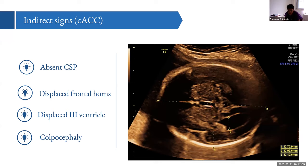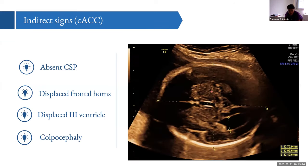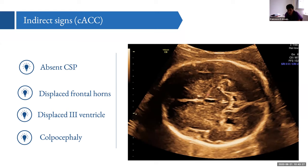A third sign is widening of the interhemispheric fissure and upward displacement of the third ventricle. Comparing a normal fetus — where you can see the corpus callosum, the cavum septum pellucidum, and the frontal horns in close relation — in ACC there is no cavum septum pellucidum at all. Furthermore, bundles of aberrant fibers run parallel to the midline, causing lateral displacement of the frontal horns, which are pushed outward.